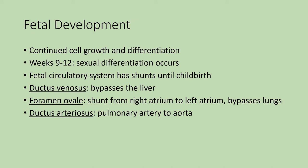Fetal development: about weeks eight to nine is where you have that transition in terminology from embryo to fetus. With fetal development, you have continued cell growth and cell differentiation, where cells develop into bone, muscle, nerve, and so on. Roughly from weeks nine to twelve, sexual differentiation occurs. The genetics for whether it is male or female are already there, but you don't start seeing differentiation of ovaries versus testes until weeks nine through twelve.